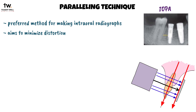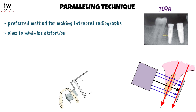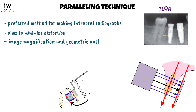To achieve this parallel orientation, the operator often must position the image receptor towards the middle of the oral cavity, away from the teeth. Even though this position makes the teeth and image receptor parallel, it increases the object-to-receptor distance and results in some image magnification and geometric unsharpness.